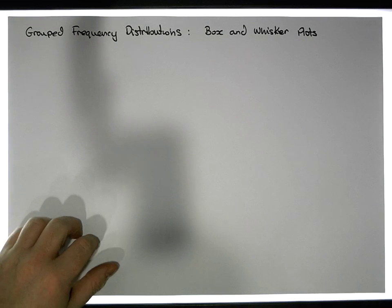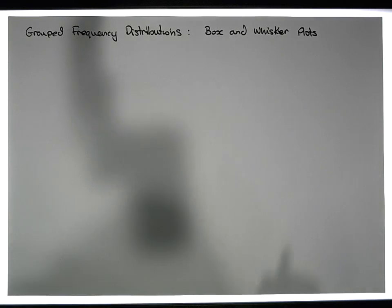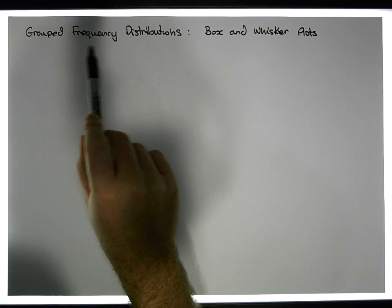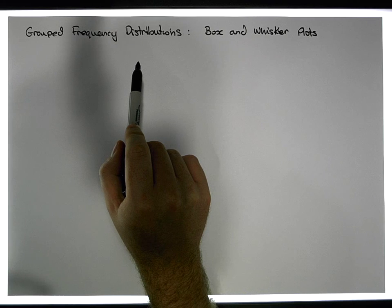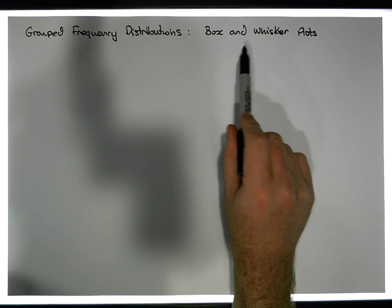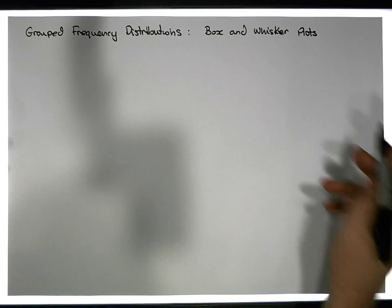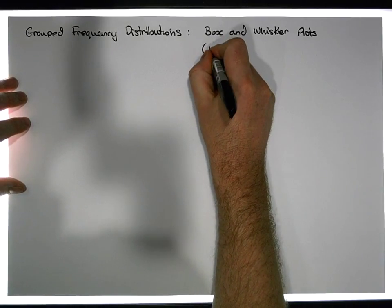Hi guys, this is Jonathan Lambert with the Mathematics Development and Support Service at the National College of Ireland. This short video — another in our series dealing with grouped frequency distributions — is going to concentrate on what is a box and whiskers plot, also known as a five-point summary.